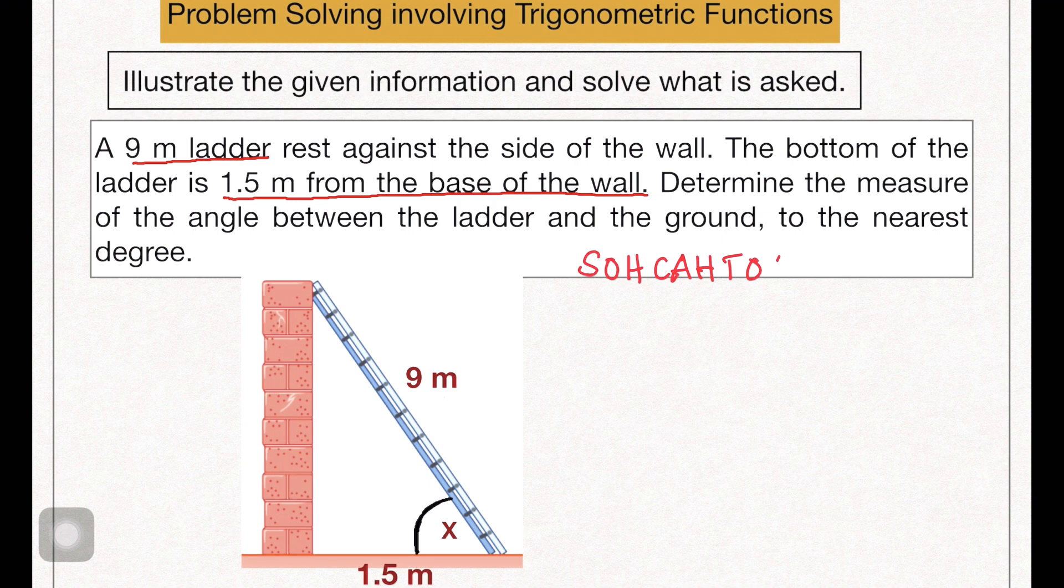Sine opposite over hypotenuse, cosine adjacent over hypotenuse, tangent opposite over adjacent. With respect to x here, this 1.5, remember what is this? This is the adjacent side.